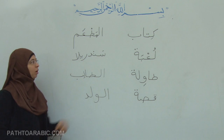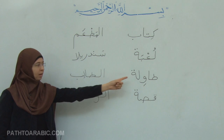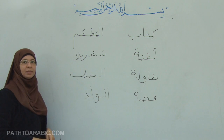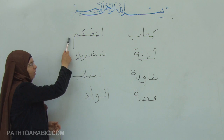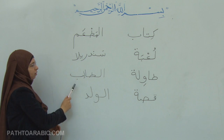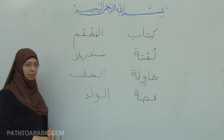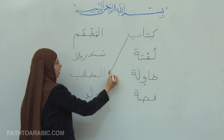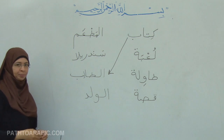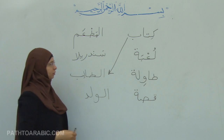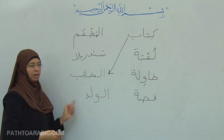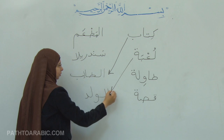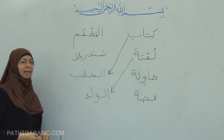Okay, we should match now — the noun here with the noun there. كتاب — it can be كتاب الطالب: the student's book. لعبة — لعبة الولد: the boy's toy.